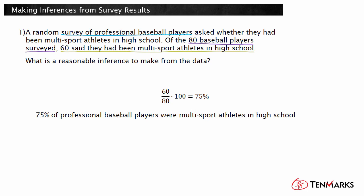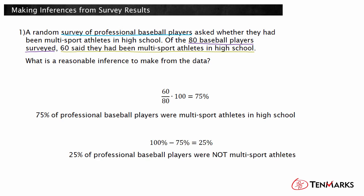You can also make a second inference about the part of the sample who did not give that answer. For instance, you can say that 100% minus 75%, or 25%, of professional baseball players were not multi-sport athletes. Notice, you should avoid inferring that this 25% were one-sport athletes or did not play sports, because those are not exact opposites of being a multi-sport athlete. You can only infer that the 25% were not multi-sport athletes in high school.